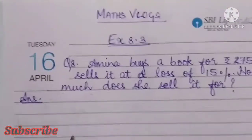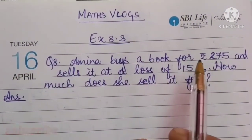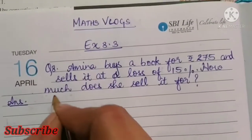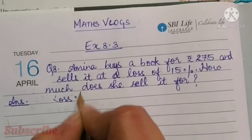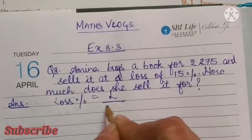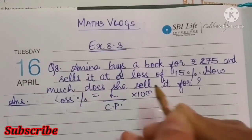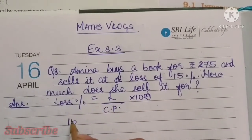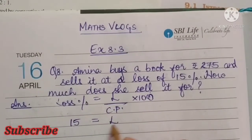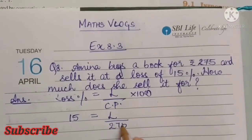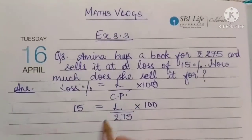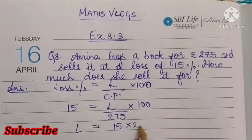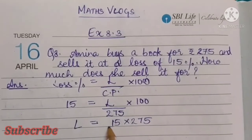Here I have written the question. We can see CP is given and the loss percentage is given. Loss percentage is equal to loss by CP into 100. Here loss percentage is given, that is 15 equals loss by CP 275 into 100. So we get loss is equal to 15 into 275 by 100.